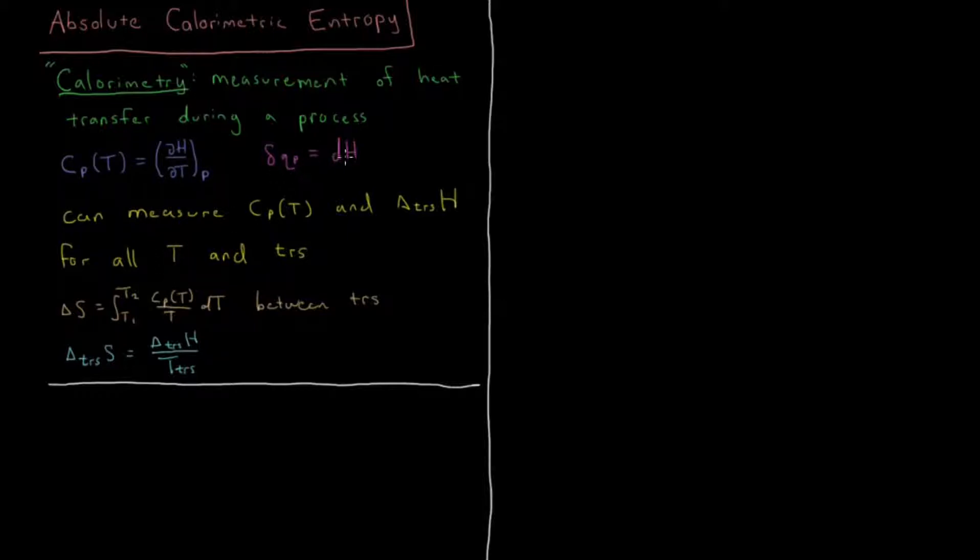And we can also, during phase transitions, measure the amount of heat that went into that phase transition, and that gives us the enthalpy of transition for that as well. So if we measure very carefully at a wide variety of temperatures, we can build ourselves a curve of the constant pressure heat capacity, and we can determine the transition enthalpy for the substances during all phase transitions as well.